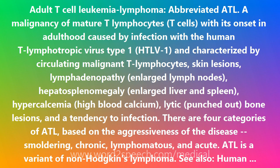Characterized by circulating malignant T-lymphocytes, skin lesions, lymphadenopathy (enlarged lymph nodes), hepatosplenomegaly (enlarged liver and spleen), hypercalcemia (high blood calcium), lytic punched-out bone lesions, and a tendency to infection.